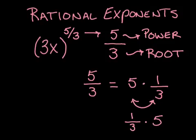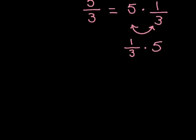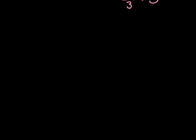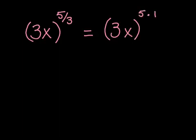What this means, if I move my screen up a little bit to have more room, is that we're going to take our original radical and rewrite it, breaking the fraction up like that. So I have my original problem, 3x to the 5 thirds. And I'm going to think of it as 3x first to the 5 times 1 third. That's just breaking my fraction up into two factors instead of one fraction.